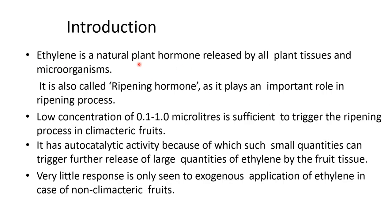Ethylene is a natural plant hormone released by all plant tissues and microorganisms. It is also called the ripening hormone as it plays an important role in the ripening process. A low concentration of 0.1 to 1 microlitre per litre is sufficient to trigger the ripening process of climacteric fruits. It has autocatalytic activity, because of which such a small quantity can trigger further release of large quantities of ethylene by fruit tissue. Very little response is seen to exogenous application of ethylene in the case of non-climacteric fruits.